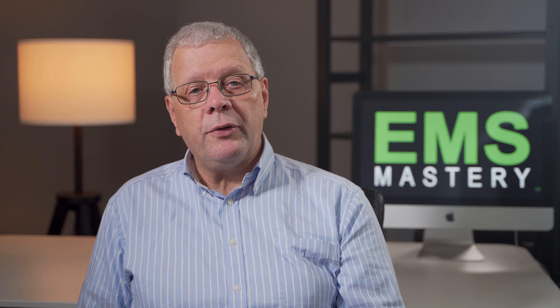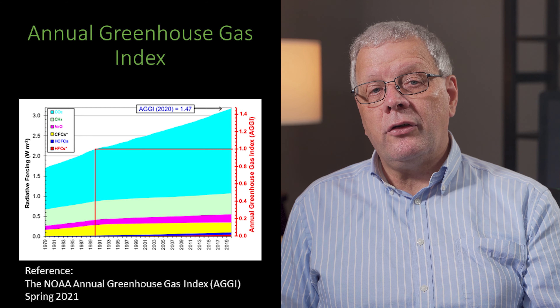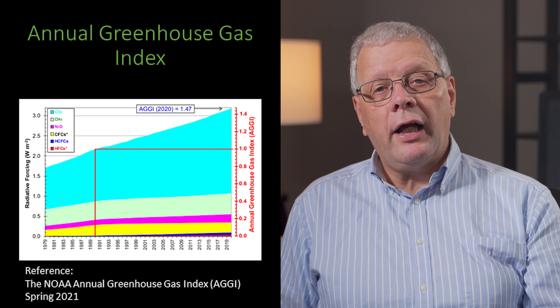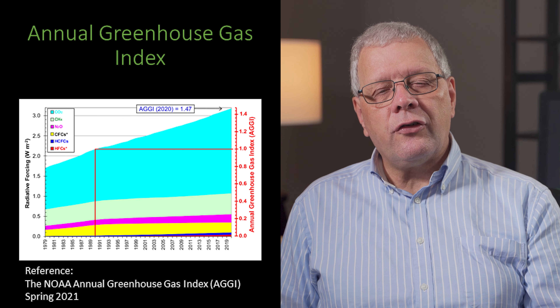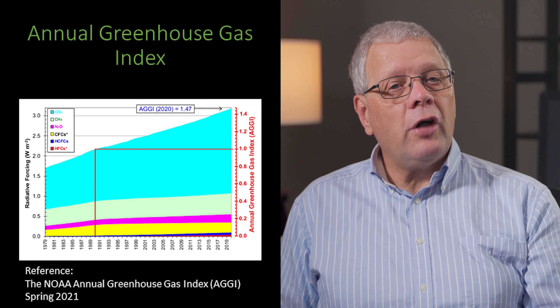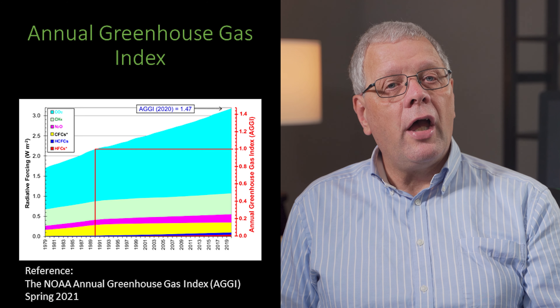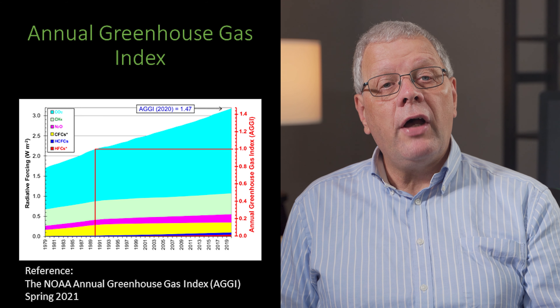A neat way of summarizing all the effects of the combined greenhouse gases reviewed in this episode has been prepared by the United States National Oceanic and Atmospheric Administration, or NOAA, in the form of an Annual Greenhouse Gas Index, or AGGI. Taking all current greenhouse gases into account, with the index set at 1 for the year 1990, the right-hand axis of the graph shows clear evidence of the rise of greenhouse gases over the past 30 years, especially the rise of carbon dioxide.